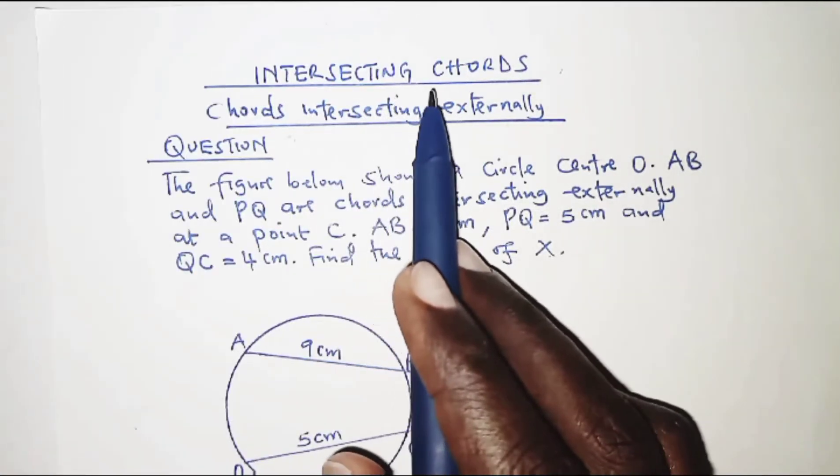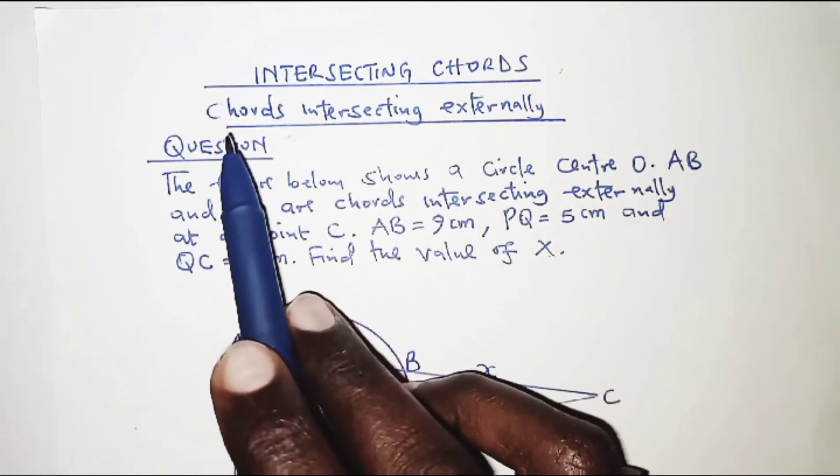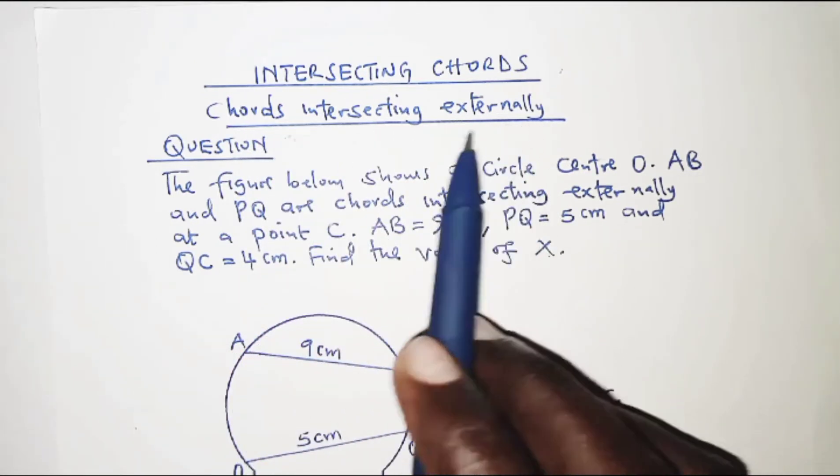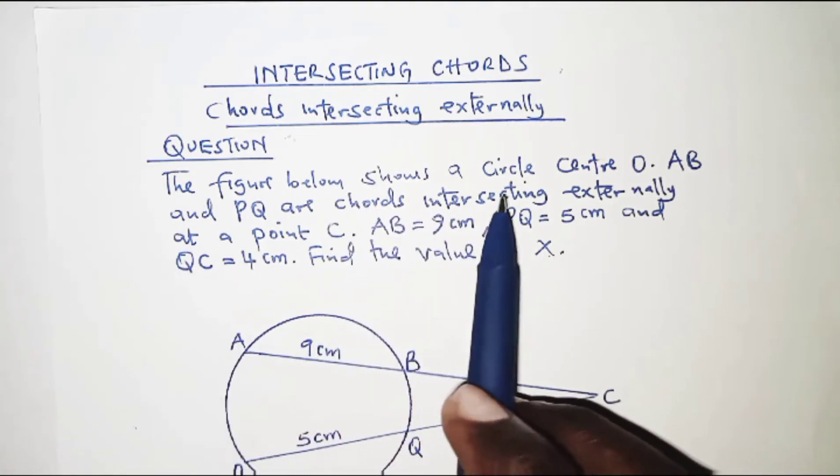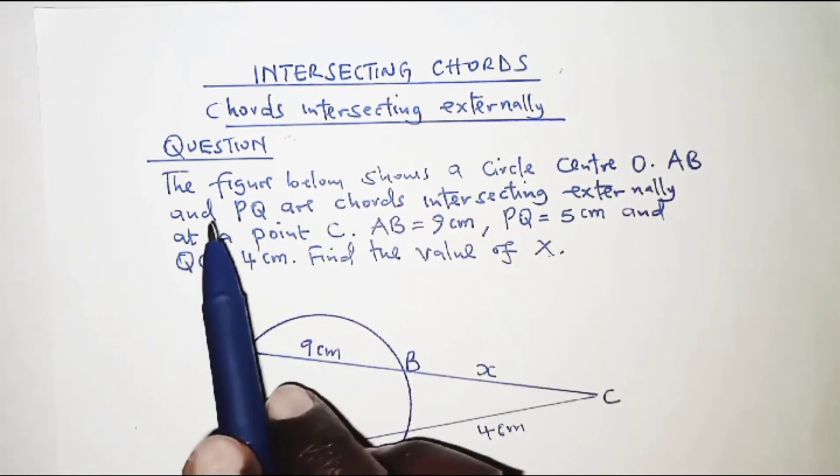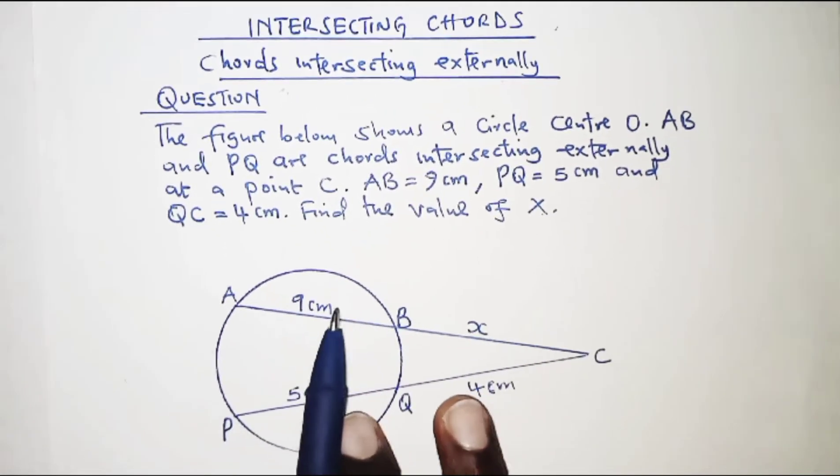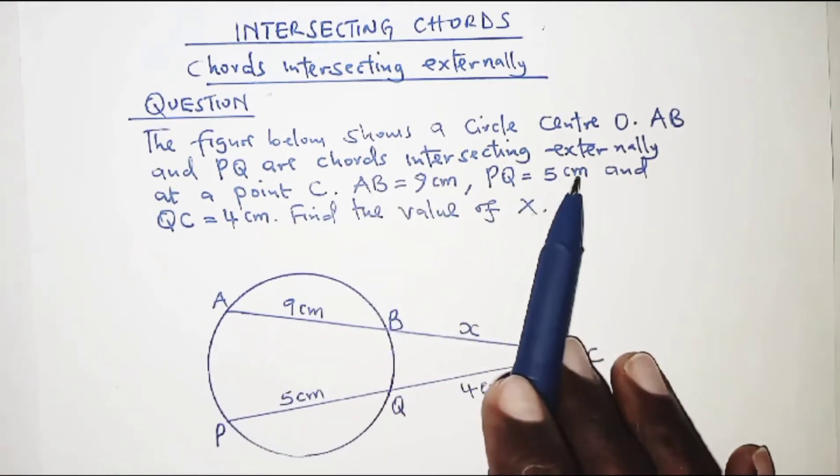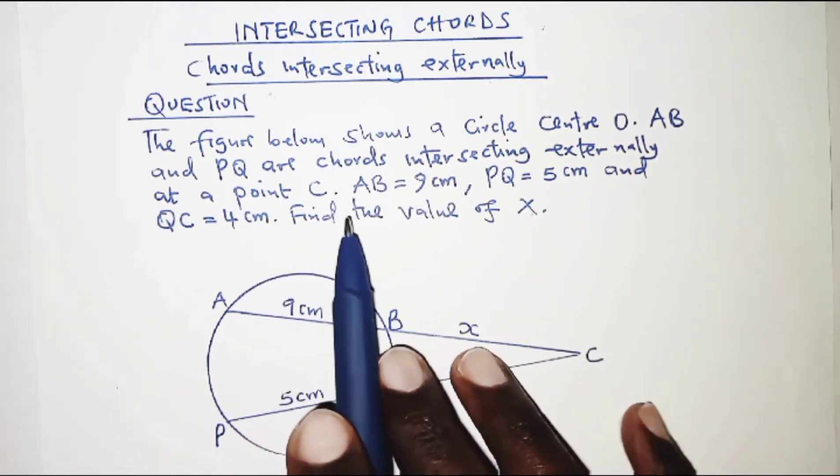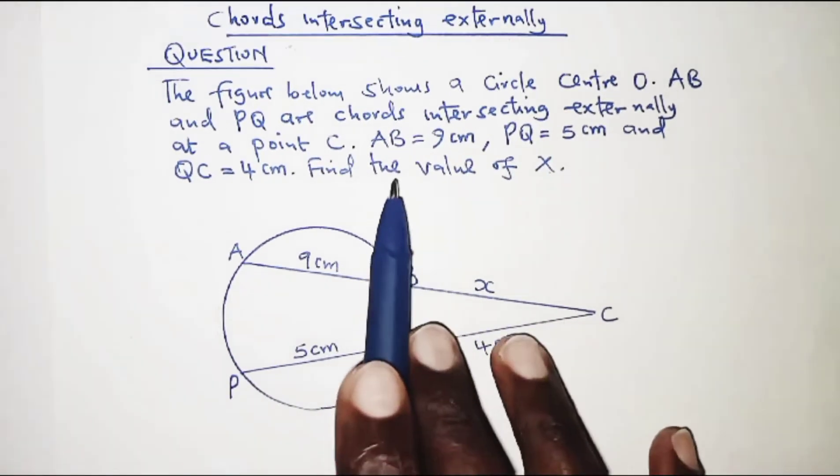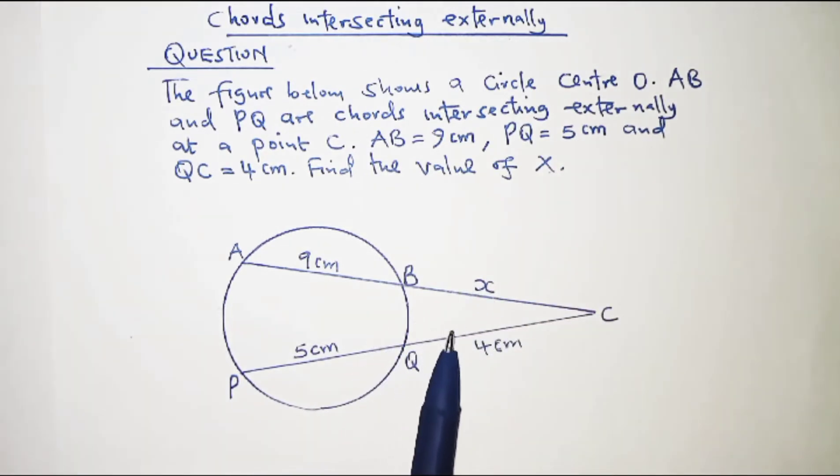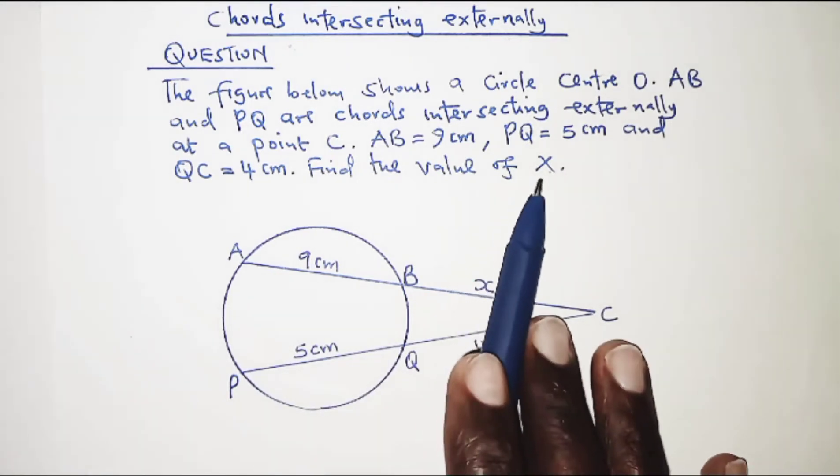Today's topic is intersecting chords, specifically chords intersecting externally. The question reads: The figure below shows a circle center O. AB and PQ are chords intersecting externally at point C. AB is 9 centimeters, PQ is 5 centimeters, and QC is 4 centimeters. Find the value of x.